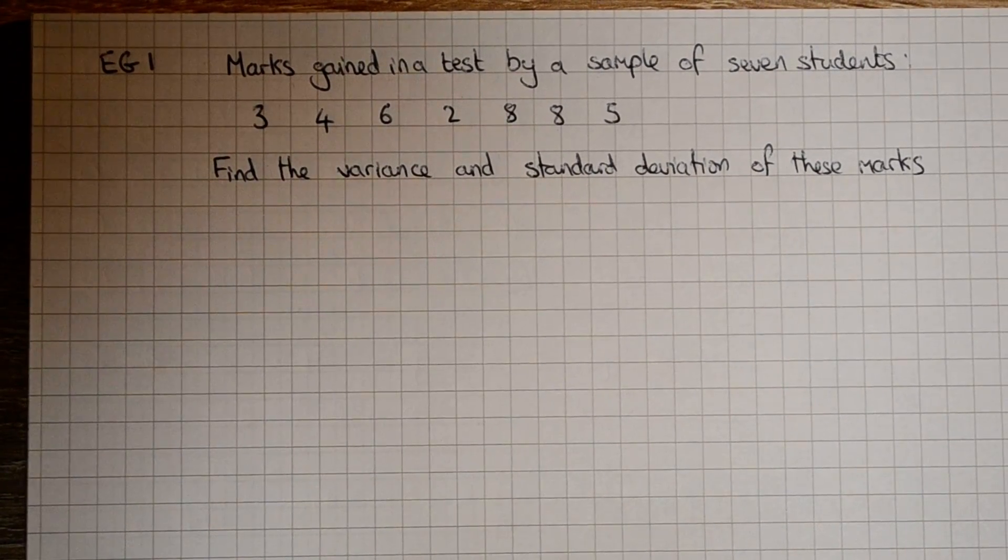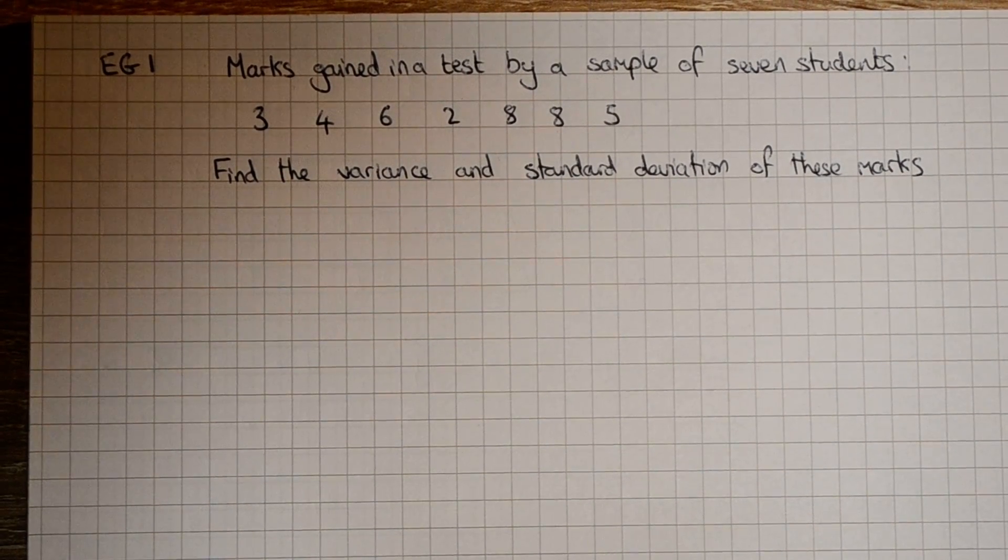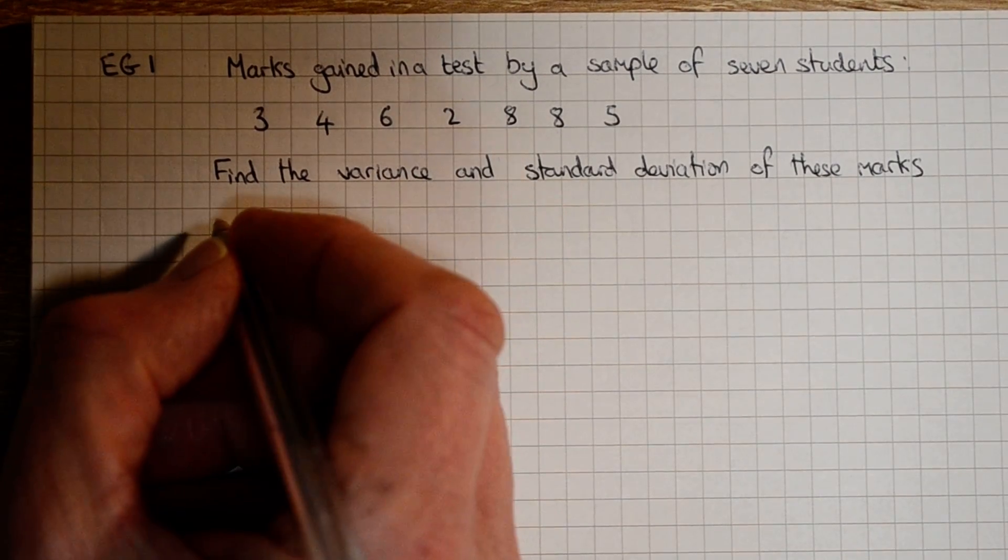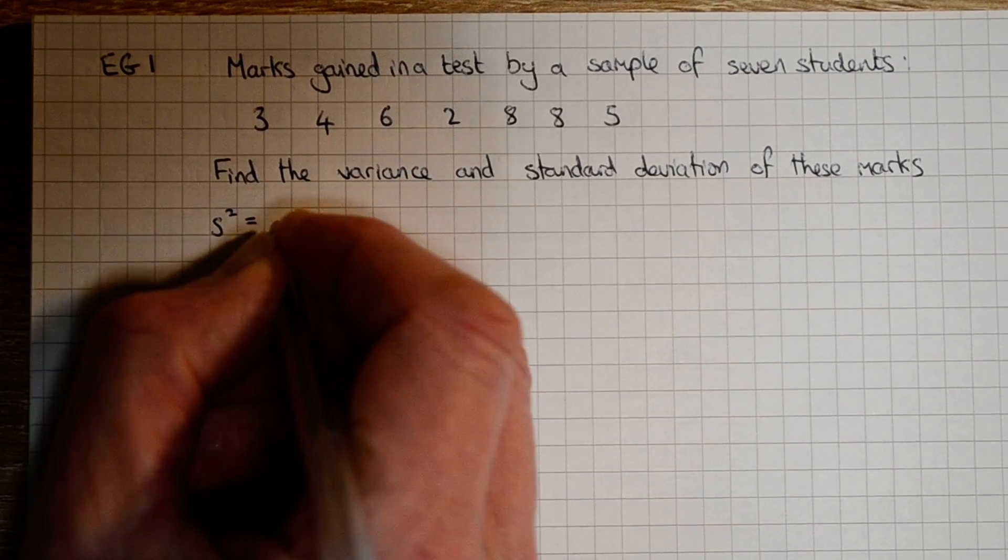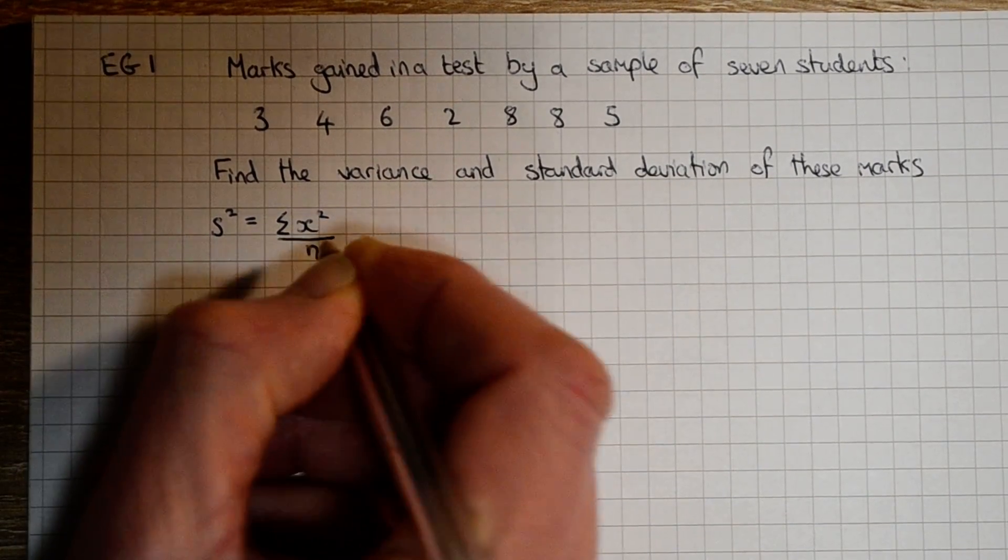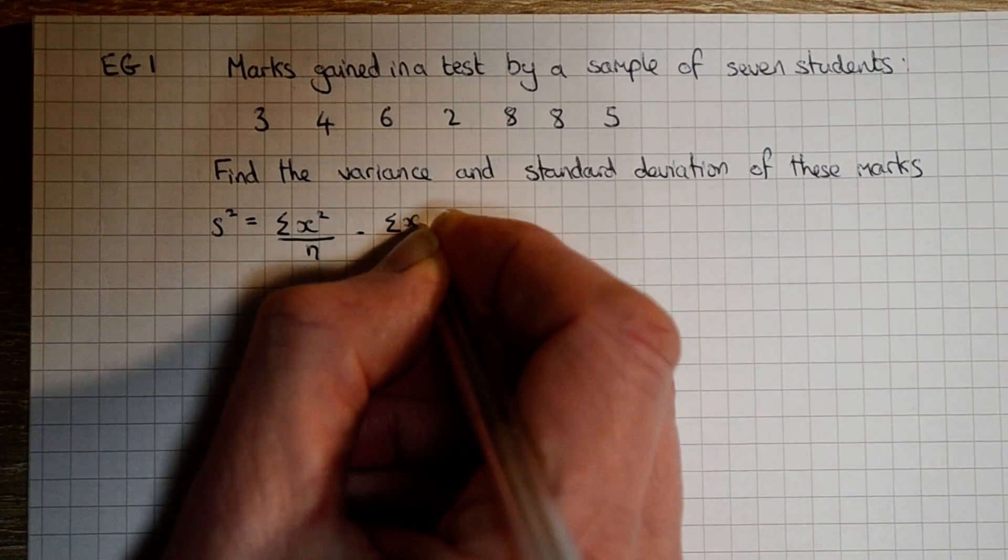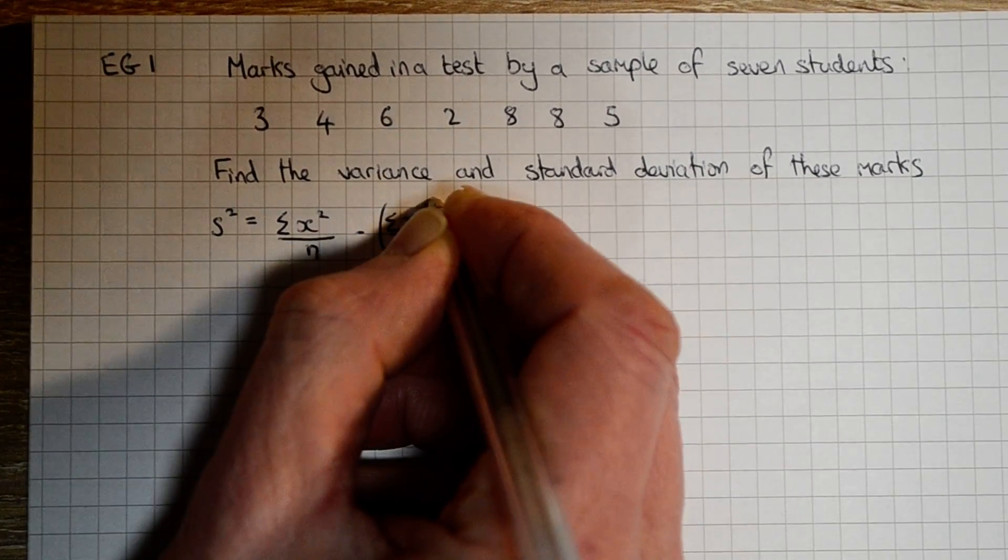In this example we're asked to find the variance and standard deviation of a set of discrete data. To find these we'll use the formula that variance is equal to the sum of x squared all over n minus the mean all squared.